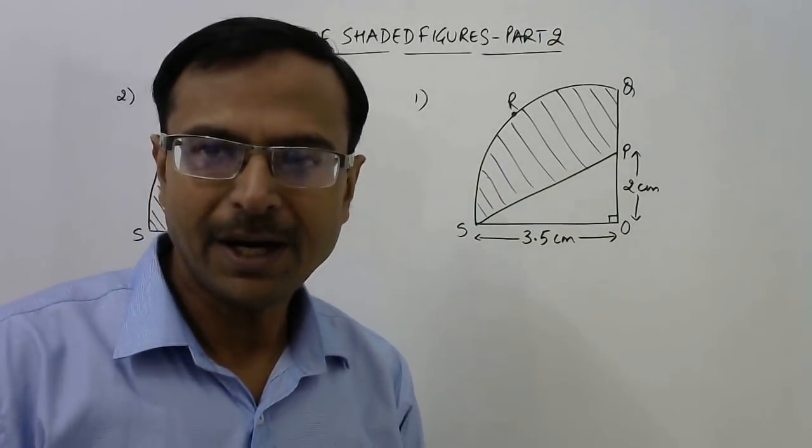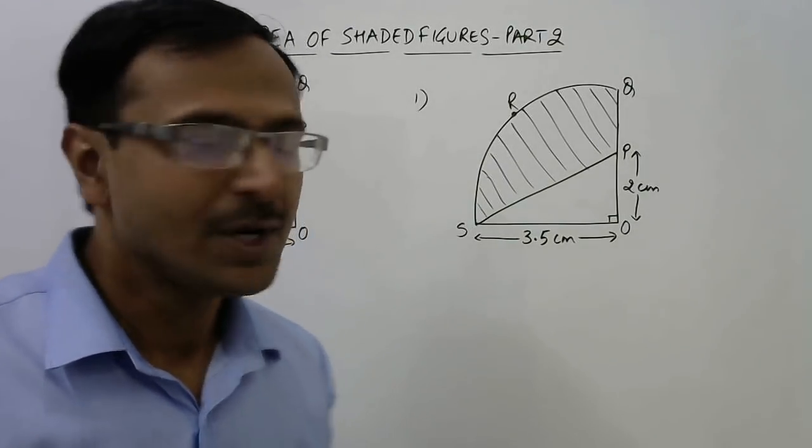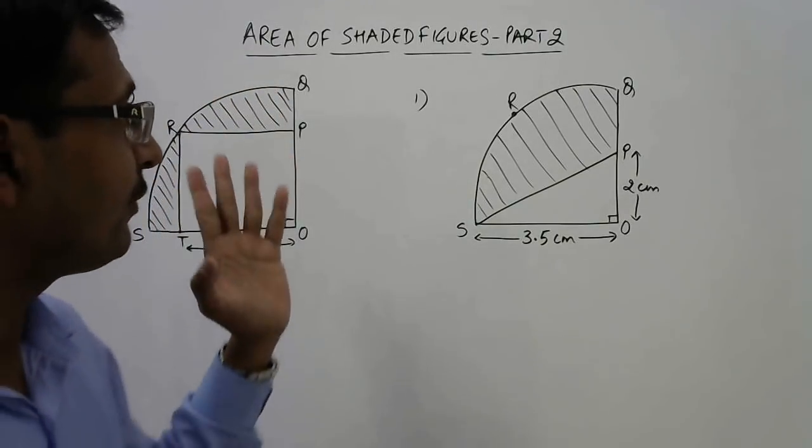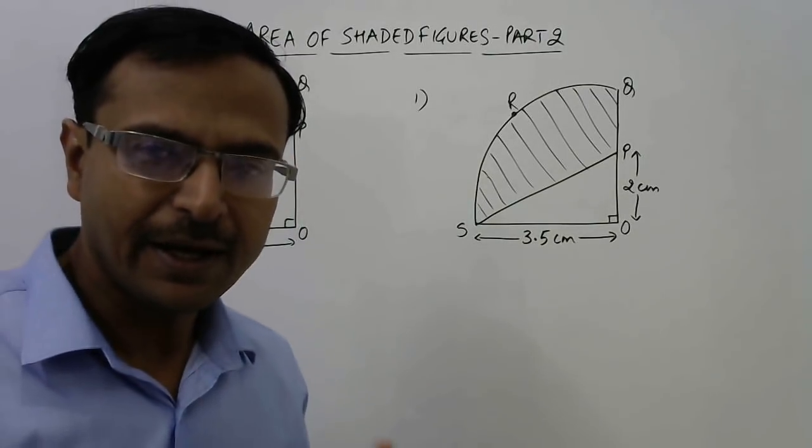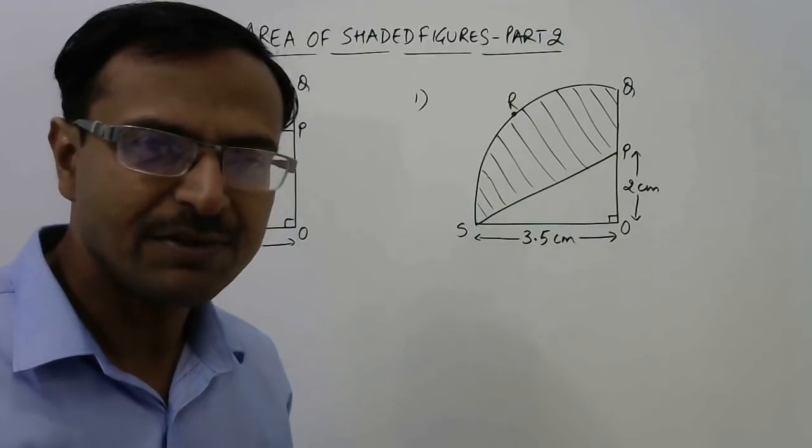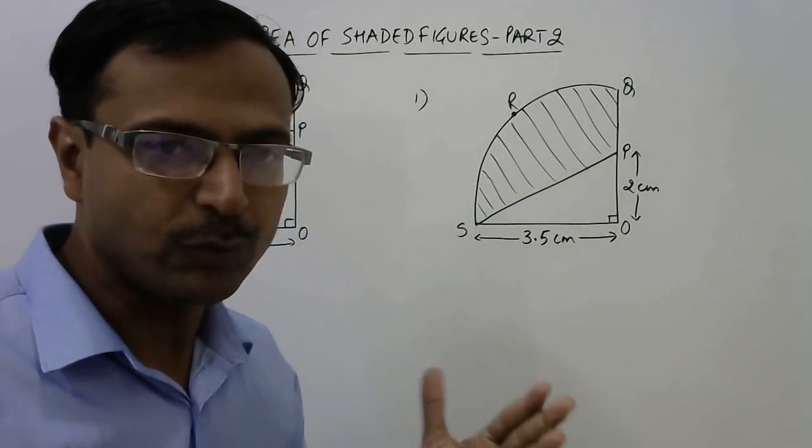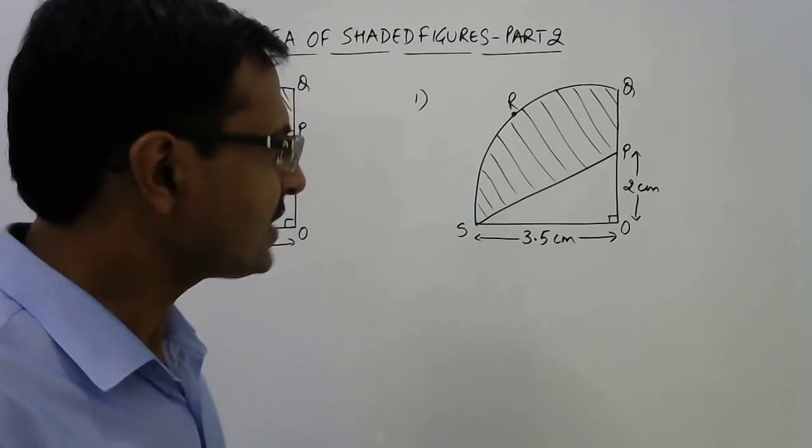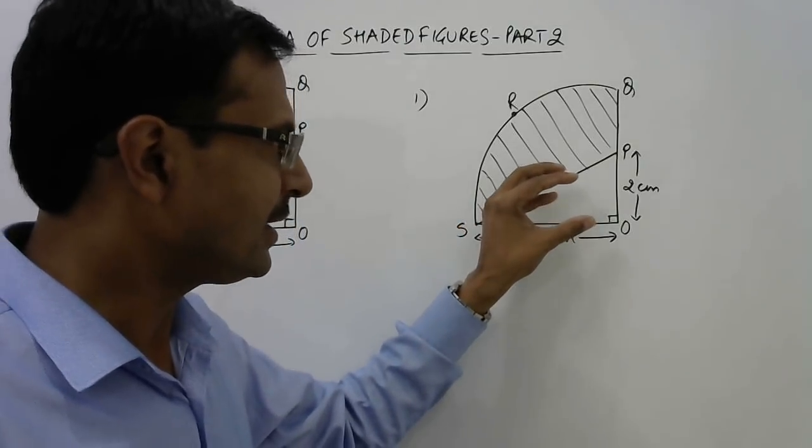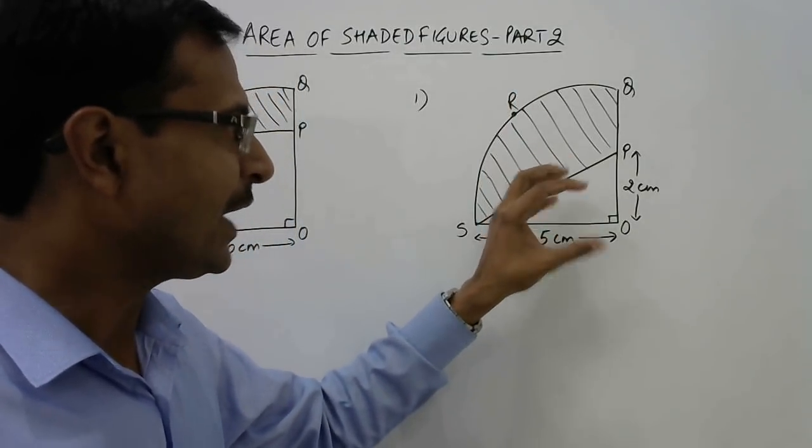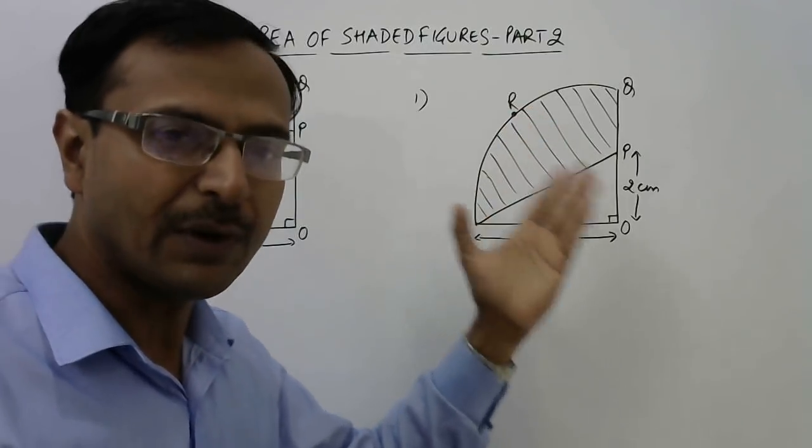Hello dear friends, in part 2 of our series of videos on finding the area of shaded figures, here I have two more figures which involve a quadrant of a circle, that is one-fourth of a circle, and some figure is inscribed in that particular quadrant and the remaining portion's area is to be found out.